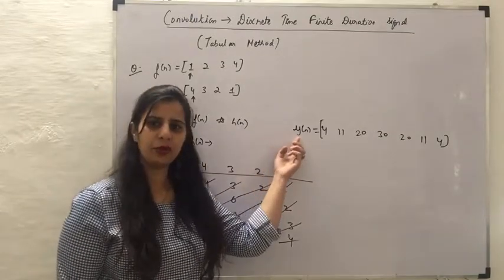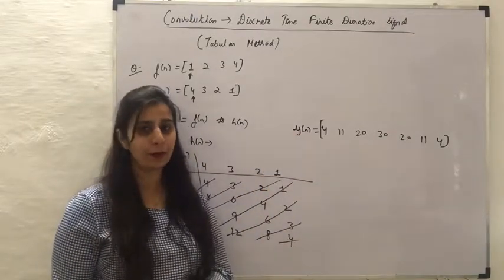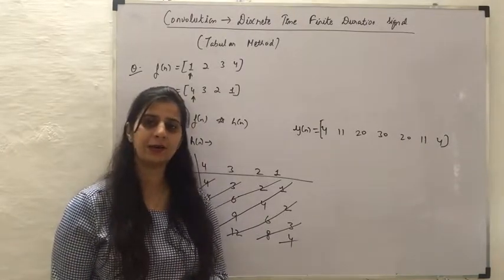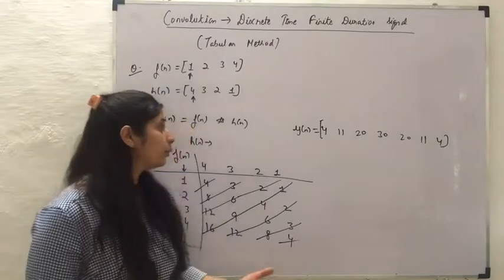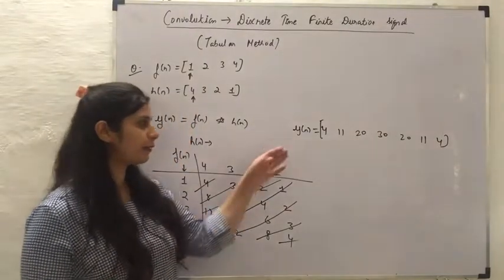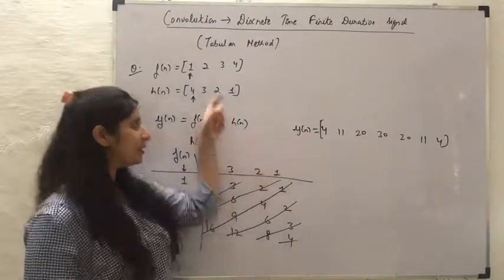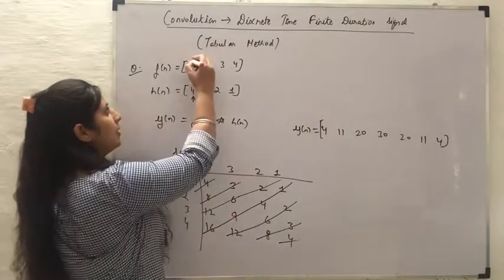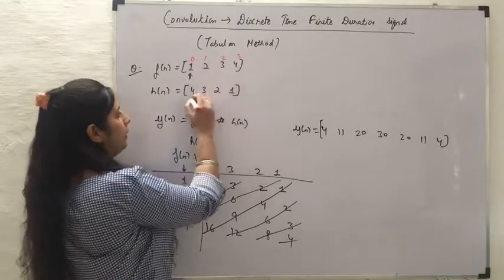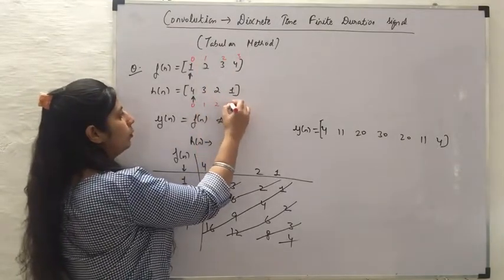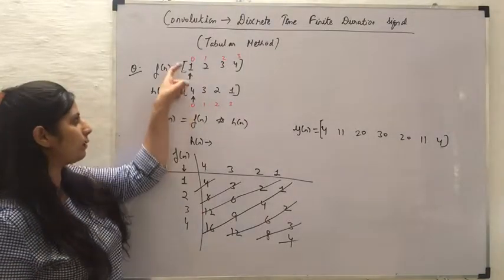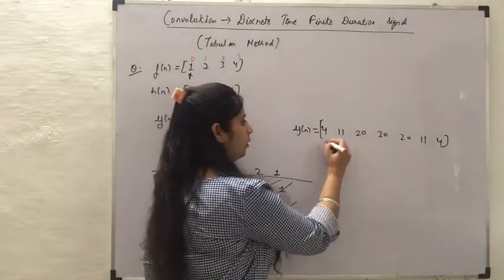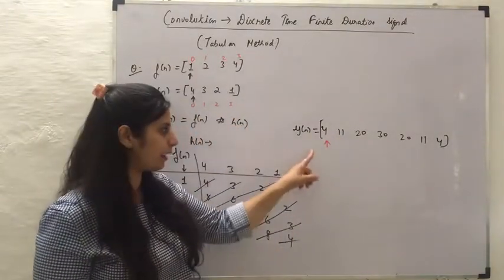Now in this y of n, we do not know where to put the arrow which denotes the value at n equals 0. The lower limit for the convolution output is the sum of the lower limits of f of n and h of n. Here the limits for f of n are 0, 1, 2, 3, and for h of n are also 0, 1, 2, 3. So the sum of the lower limits is 0 plus 0 equals 0, meaning the arrow is placed at the first value, which is 4.